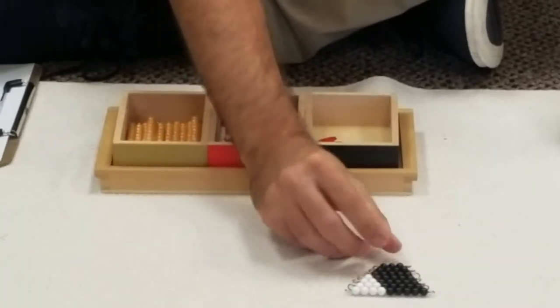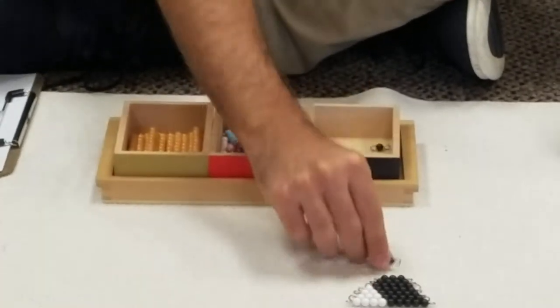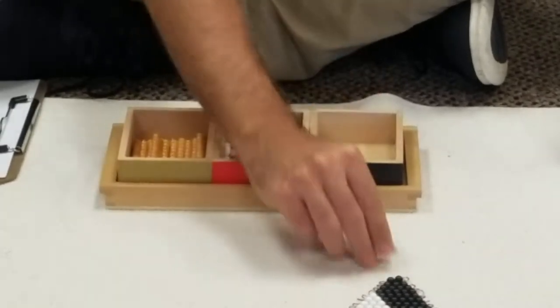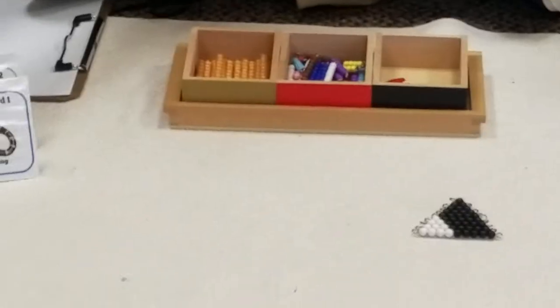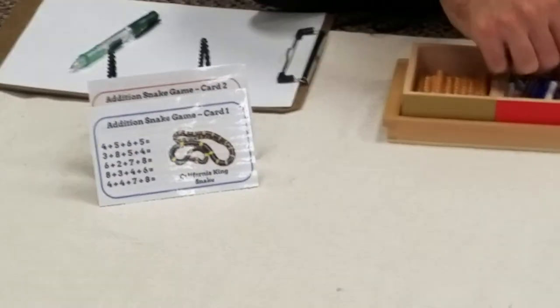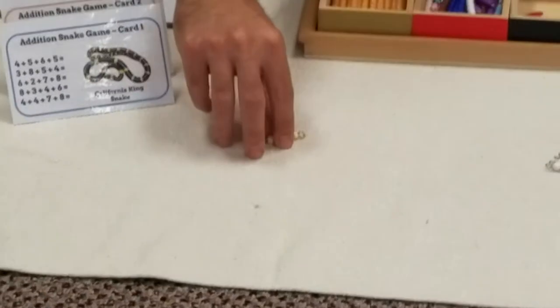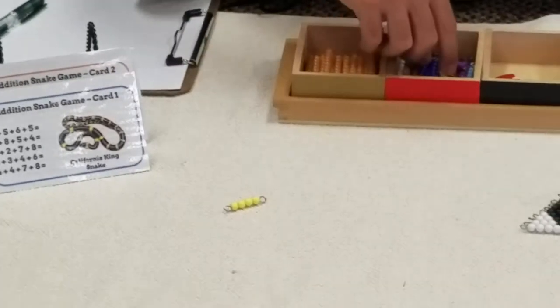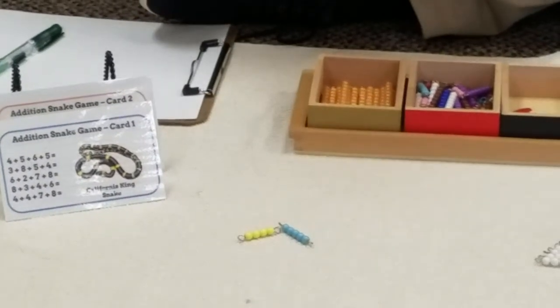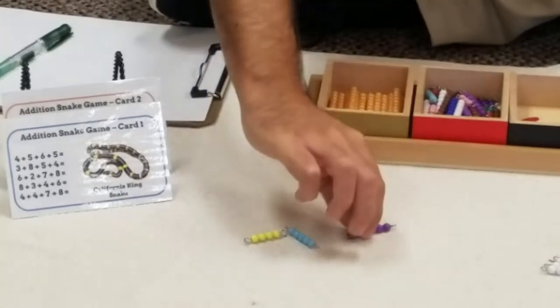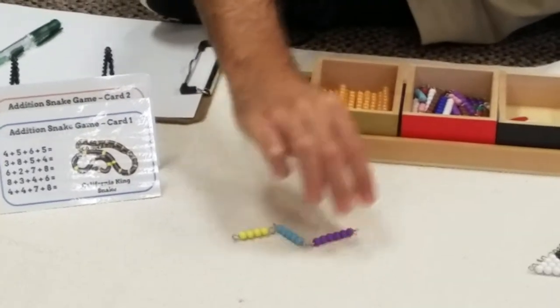We're gonna look at the card and make our snake. Our card is telling us 4 plus 5 plus 6 plus 5, and we get our counters.